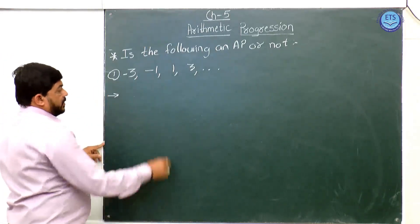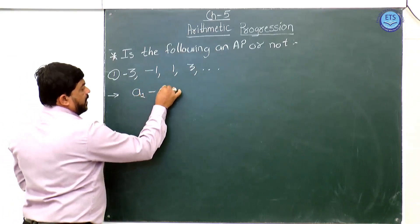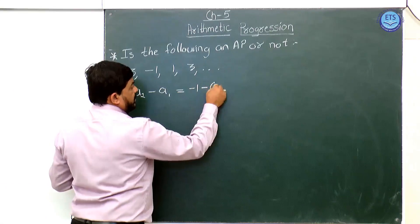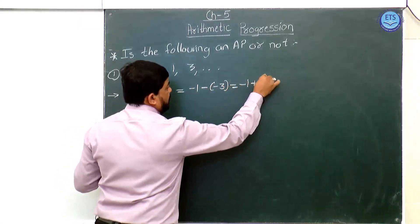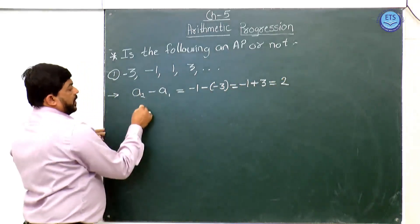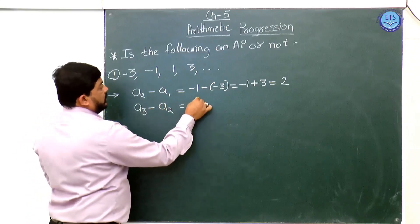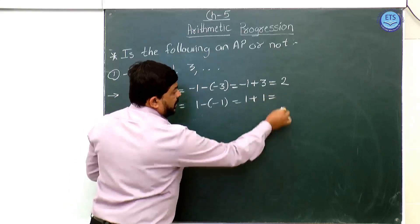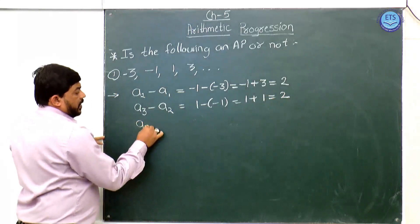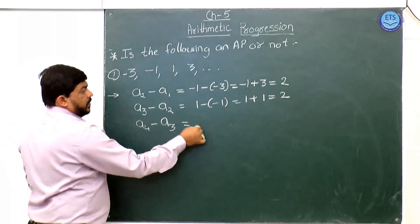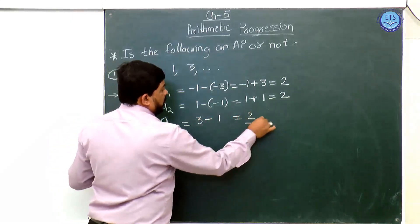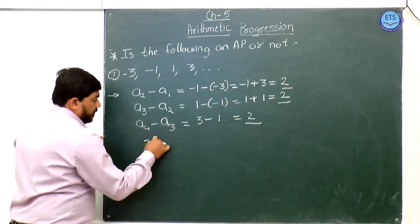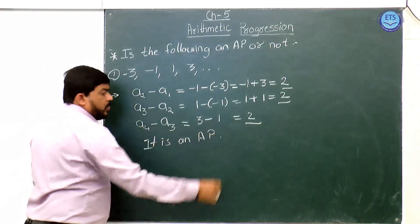First of all, find the common difference. That is your second term minus first term: a₂ minus a₁ = minus 1 minus (minus 3), which is minus 1 plus 3, so the difference is 2. Check the third term minus second term: 1 minus (minus 1) = 2. Fourth term minus third term: 3 minus 1 = 2. You can see that the common difference is always 2, so this is an Arithmetic Progression.